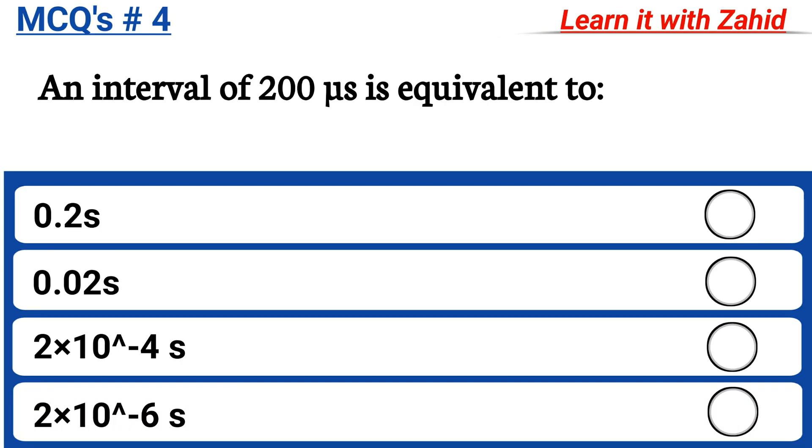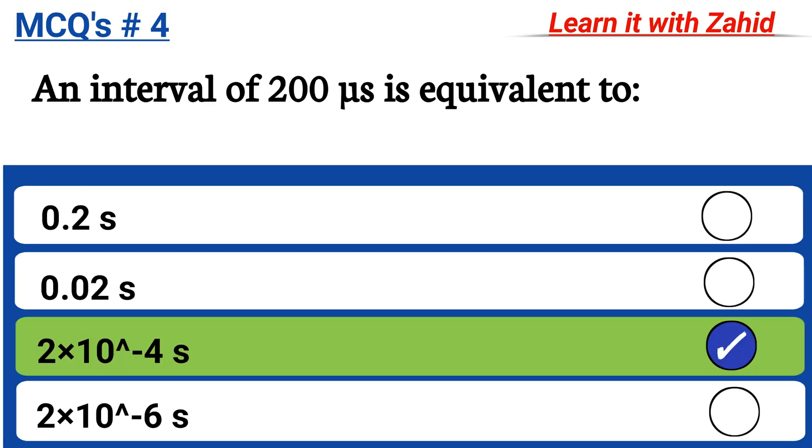An interval of 200 microsecond is equivalent to 0.2 second, 0.02 second, 2 into 10 raised to power minus 4 second, 2 into 10 raised to power minus 6 second. And the correct answer is 2 into 10 raised to power minus 4 second.